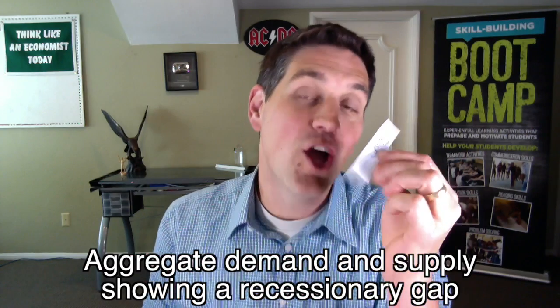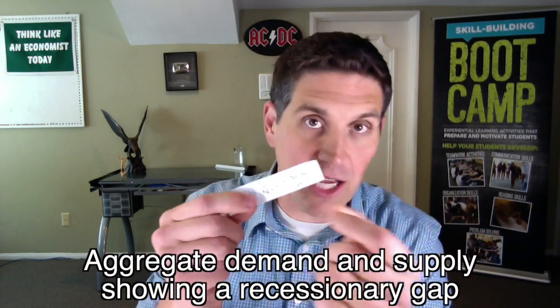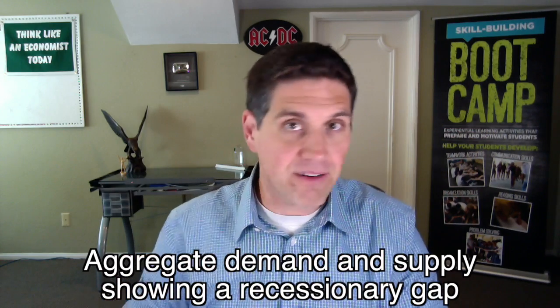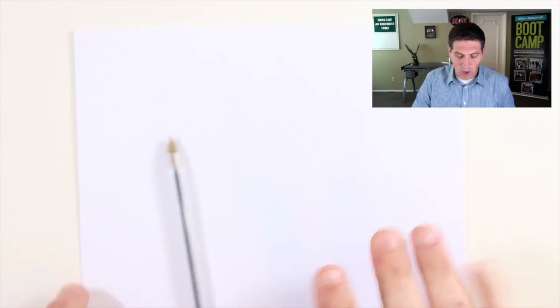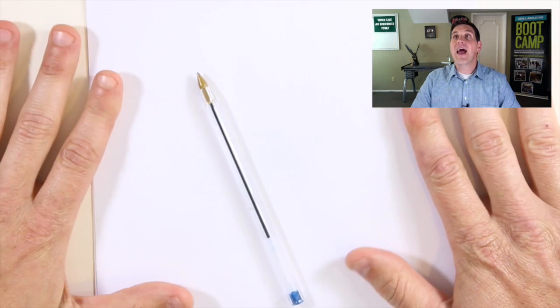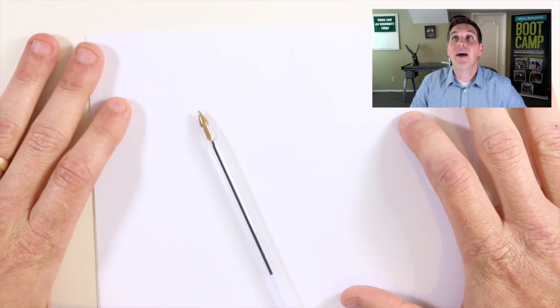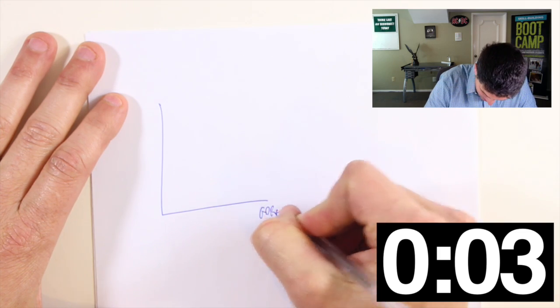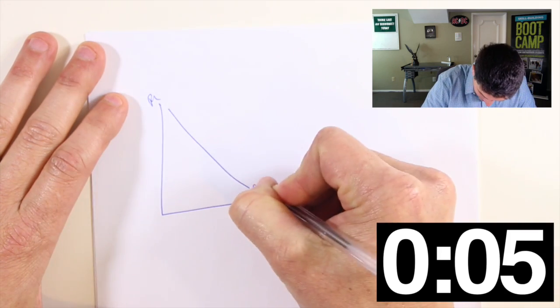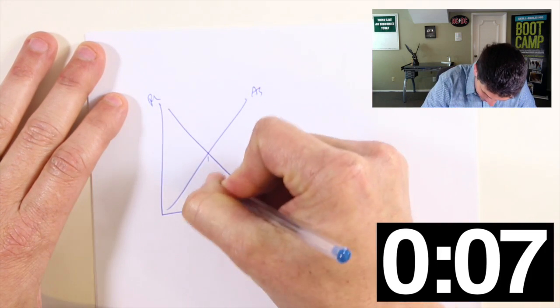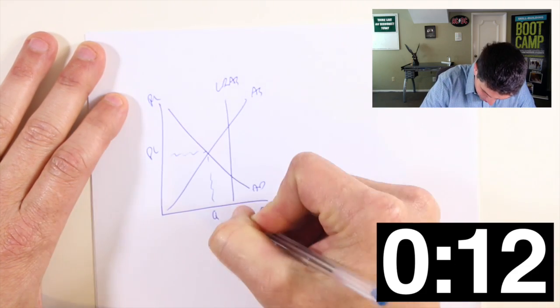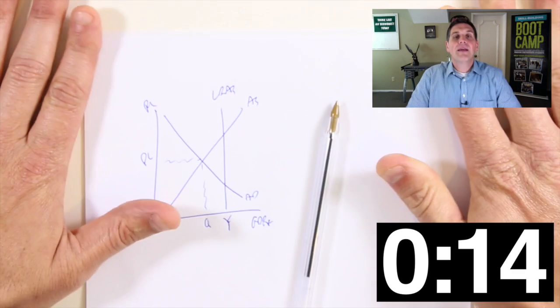The rules are just like doing a race with a Rubik's cube. Put your hands down, put your pen down. I'm going to choose one randomly, give us the graph, and say ready, set, go. Draw it as fast as you can and put your hands back down. First one: aggregate demand supply showing a recessionary gap. Put your pencils down. Here we go. On your mark, get set, go.